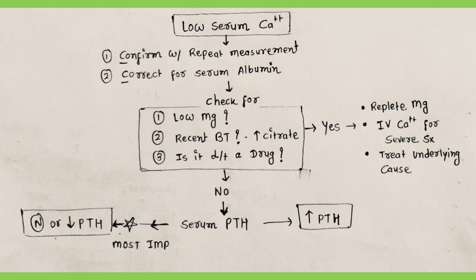The second cause to exclude is hypomagnesemia, which causes resistance to parathyroid hormone. In cases of hypomagnesemia, replete magnesium. If there are severe symptoms of hypocalcemia, also start IV calcium.